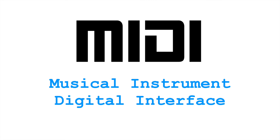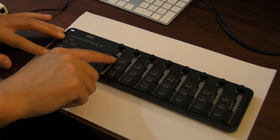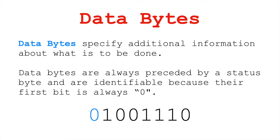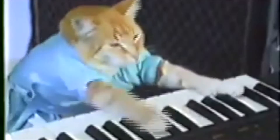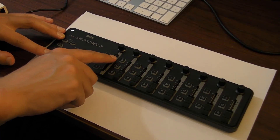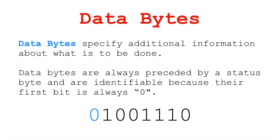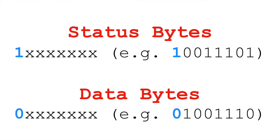In MIDI, there are two kinds of bytes: status bytes and data bytes. Status bytes identify what is going to be done — is this message about a key going down? Is it about a continuous controller? Data bytes give the values that correspond with those status bytes: which key is going down, how hard is it going down, which control knob is being turned, what value is it being turned to. Status bytes always start with a 1, and data bytes always start with a 0. These first binary digits are reserved to let us know what kind of byte we're storing or transmitting.